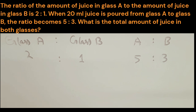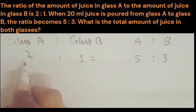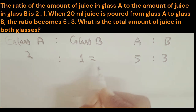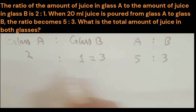Students, you have to think about whether the amount of juice is increased, decreased, or remained the same. Of course, the amount of juice remained the same because juice was just poured from glass A to glass B, so the overall juice remained the same. Initially, glass A had 2 units and glass B had 1 unit, making a total of 3 units.